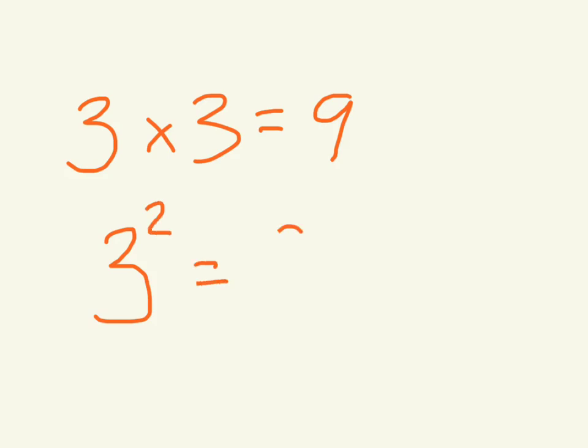One more quick bonus lesson before we get to the homework. If you have a number, a square product like 3 times 3 equals 9, there's another way to write it. If you write the 3 and then a tiny 2 up there, that's the same thing, okay?